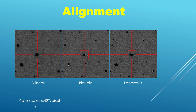The plate scale here is a bit undersampled at 6.42 arc seconds per pixel, so you can see that these are smaller stars. As a result, in that scenario you would lean towards either bilinear or bicubic. Just looking at the artifacts generated off of this star, I would lean towards bilinear.